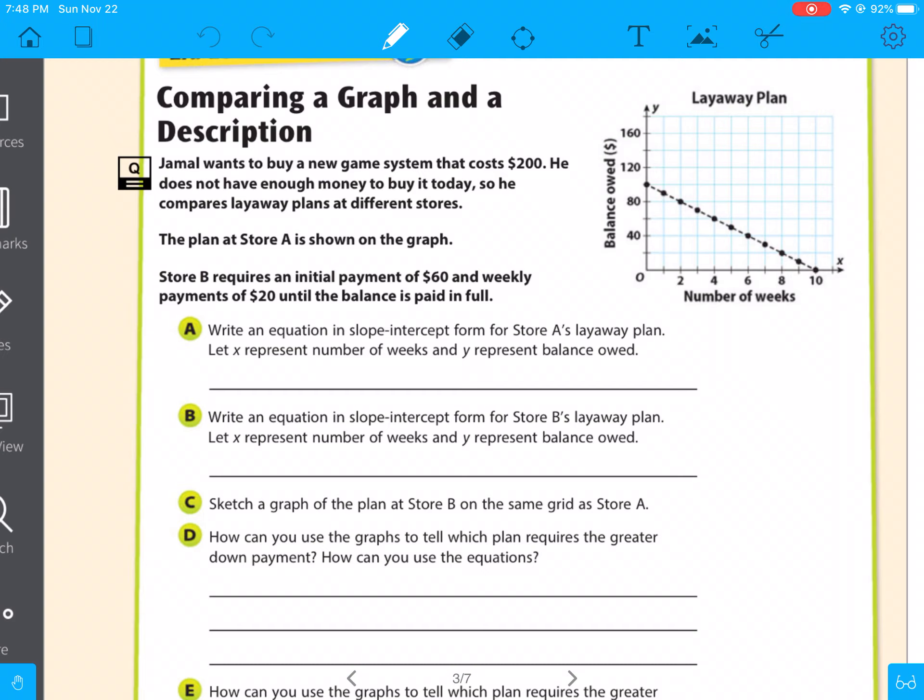Now write an equation in slope intercept form for store A's layaway plan. Store A is on the graph. So we need our y equals something x plus something. Now, this is going to be our y intercept. So it looks like they're going up by 20s. So we have $100 to spend. And then you can do rise divided by run. Looks like it goes down 20 over 2, which is negative 10. So it looks like they're saving $10, or they're going to pay $10 on the plan. And they only borrowed $100, which is our y intercept. So it's y equals negative 10x plus 100. So after 10 weeks, all $100 is paid off.